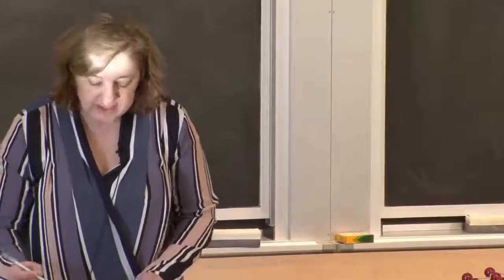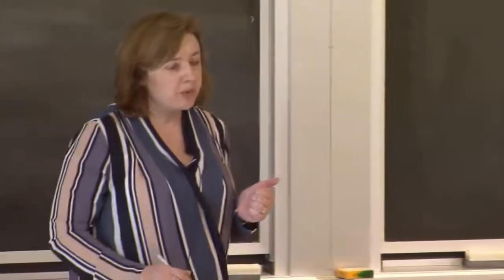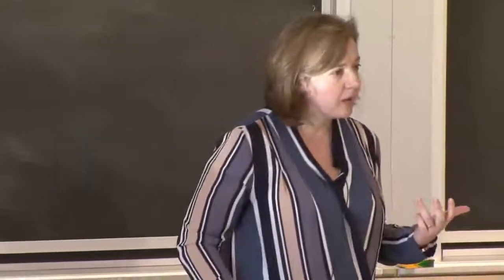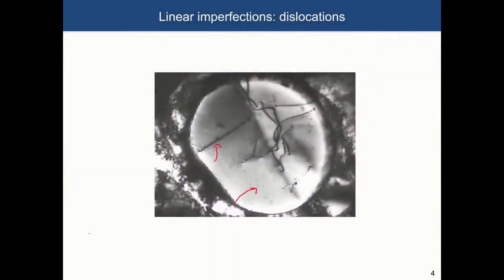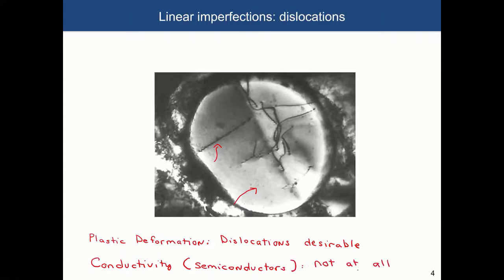In many instances, the presence of dislocations is desirable in materials. There are many strengthening mechanisms in metals, and one of them is introducing more and more dislocations for plastic deformation. However, for electrical conductivity in semiconductors and other materials, dislocations really kill the conductivity — so it is non-desirable.